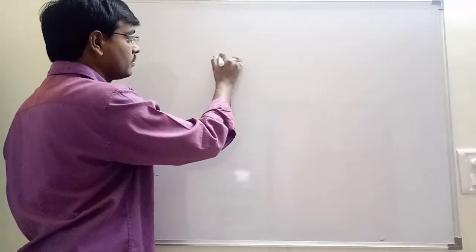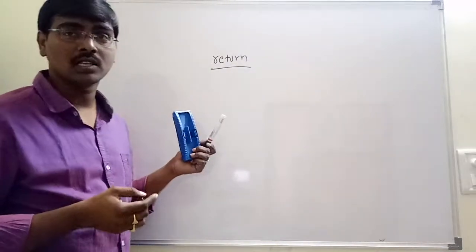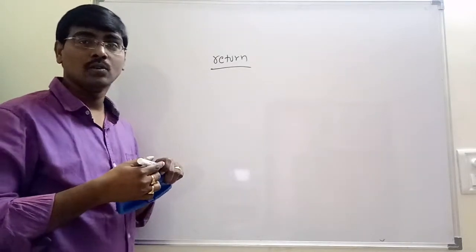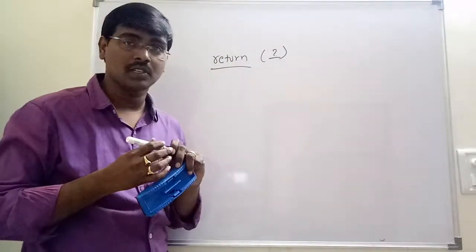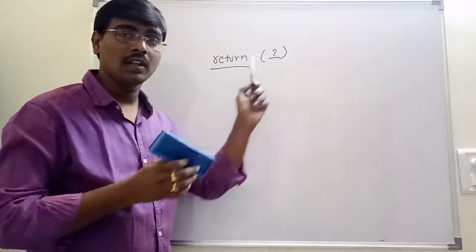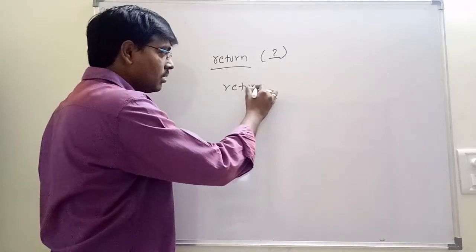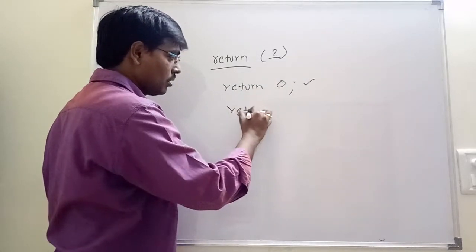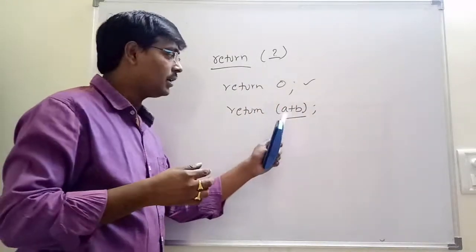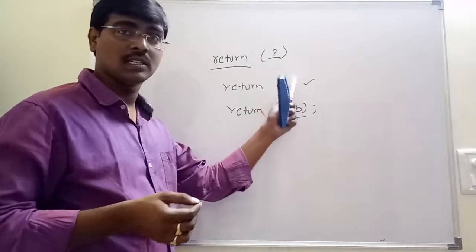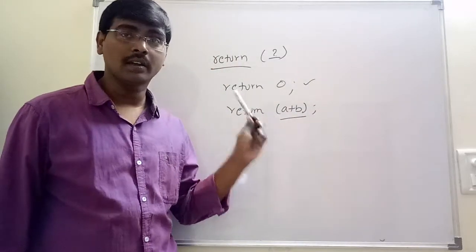Next, the return statement. Whenever a method or function is called, we have to return some value to the calling function. The syntax is: return someVariable, or return someExpression. The expression is evaluated and returns a single value — for example, return 0, or return a plus b, which evaluates to the sum of a and b. These are the break, continue, and return statements.